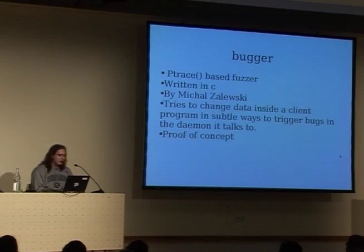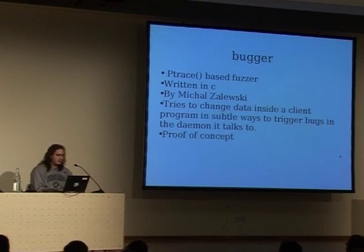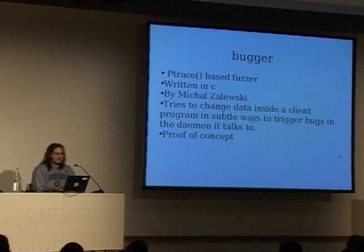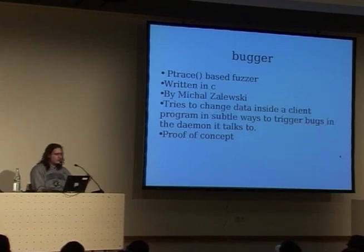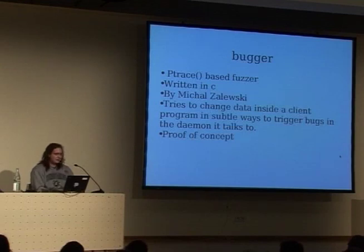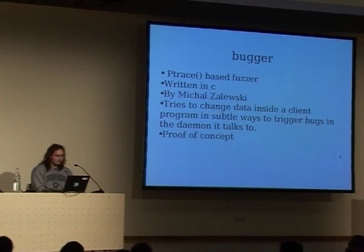The next one is Bugger, which is sort of a new approach to fuzzing. Written by Michal Zalewski, it uses ptrace to fuzz. The problem is: if you've got encryption, checksums, and compression, you really don't want to build fuzzers for those because it takes days or weeks. So what he said was — why not just change the client into a fuzzer? He has about 500 lines of C code which attaches to your normal client, then makes subtle changes to the data you're going to send to your server — before it gets encrypted, before it gets compressed, before any checksumming is done. This makes it a lot easier. It's a proof of concept and not very big, but it has an enormous amount of potential.